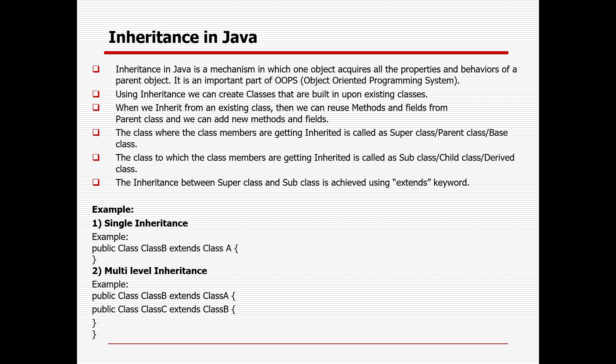OOPs is nothing but Object Oriented Programming Structure. There are four important concepts apart from objects and classes: inheritance, polymorphism, encapsulation, and abstraction. Inheritance in Java is a mechanism in which one object acquires all the properties and behavior of a parent object. Using inheritance, a user can create classes that are built upon existing classes. The class where members are getting inherited is called the super class, parent class, or base class, and where it is inherited is called the sub class, child class, or derived class.